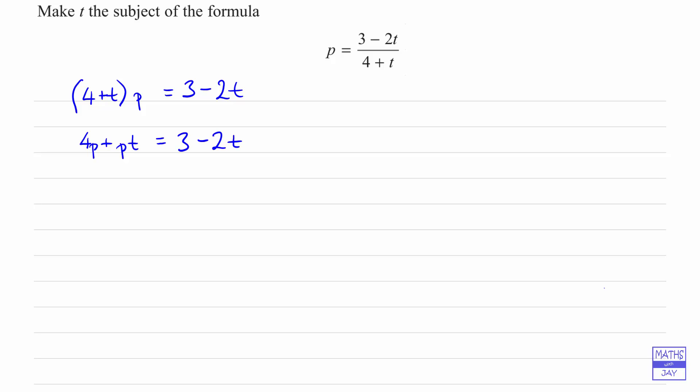So that's 3 minus 2t. Now we're in a position to gather everything together on the left hand side that's got a t in it and everything else on the right hand side. So let's just leave the pt on the left hand side and subtract 4p from the right hand side as well.